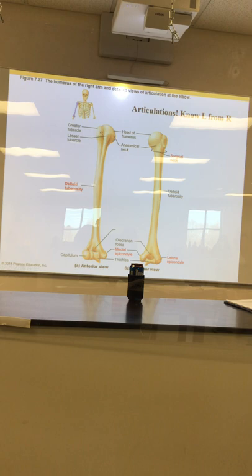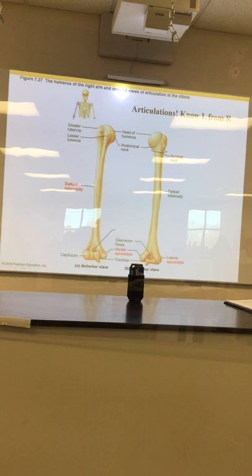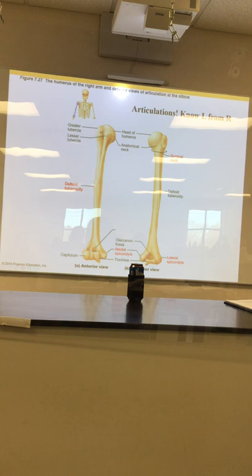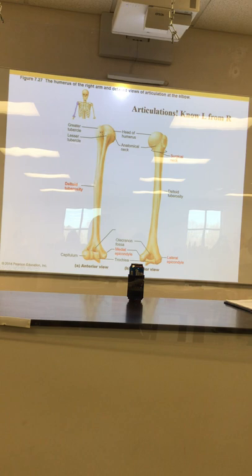The ulna fits against the trochlea — you can see the sharp edge. Then the capitulum: what's impressive about your arm and the way it moves? It's a pivot joint — we're talking about the twisting. The capitulum is a round structure, and look at the end of the radius — see how round it is? It can sit on there and just rotate because of the shape of the articulating surface. It's got a little band of connective tissue from the ulna wrapped around it, and these can just spin all day long.